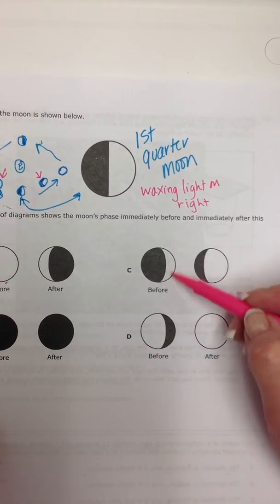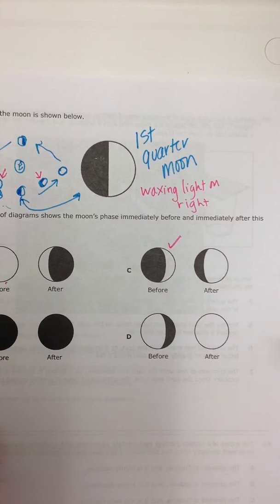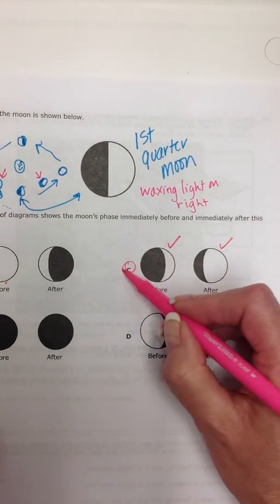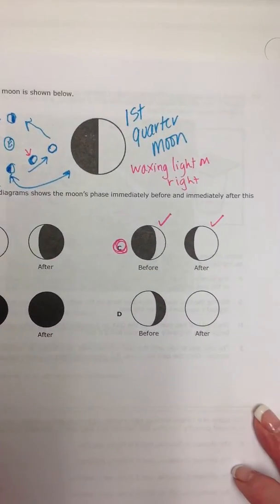Here we go. We have a waxing crescent. Looks good. And looky there, a waxing gibbous. So those were the ones we were looking for. We're going to check the last one.